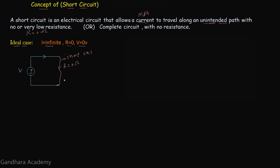The current through this unintended path, by using Ohm's law, will be equal to V — the voltage across this DC voltage source — divided by the resistance across this unintended path, which is zero ohms. So the current in this case is infinite. An infinite amount of current flowing through this unintended path is impossible, because it violates the law of conservation of energy.